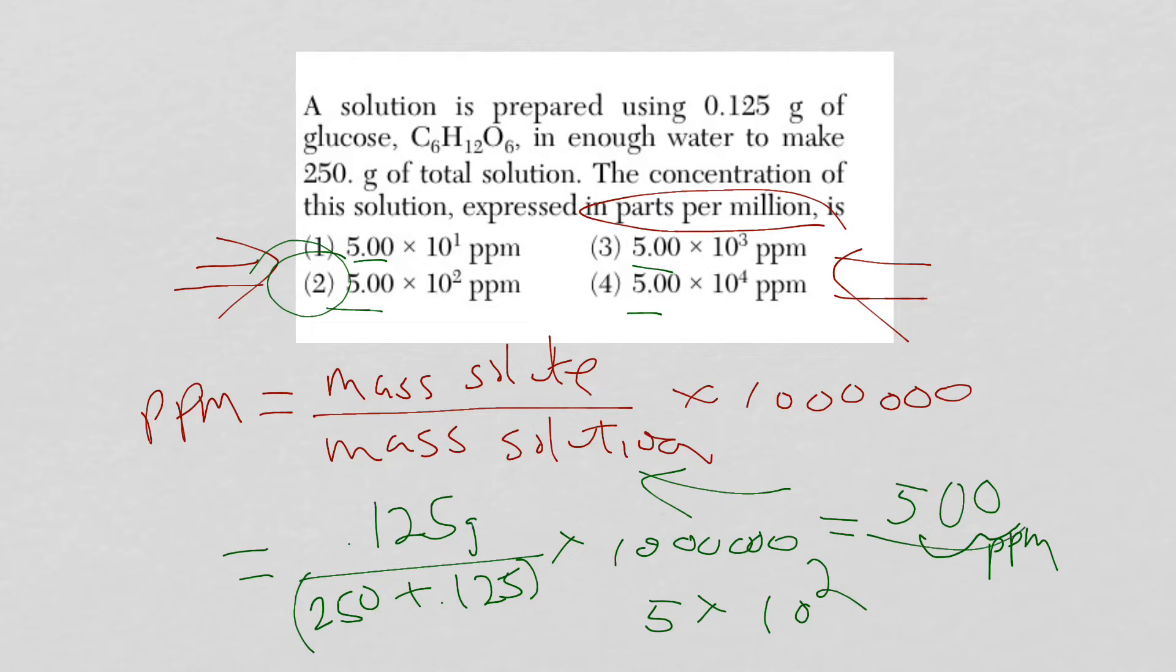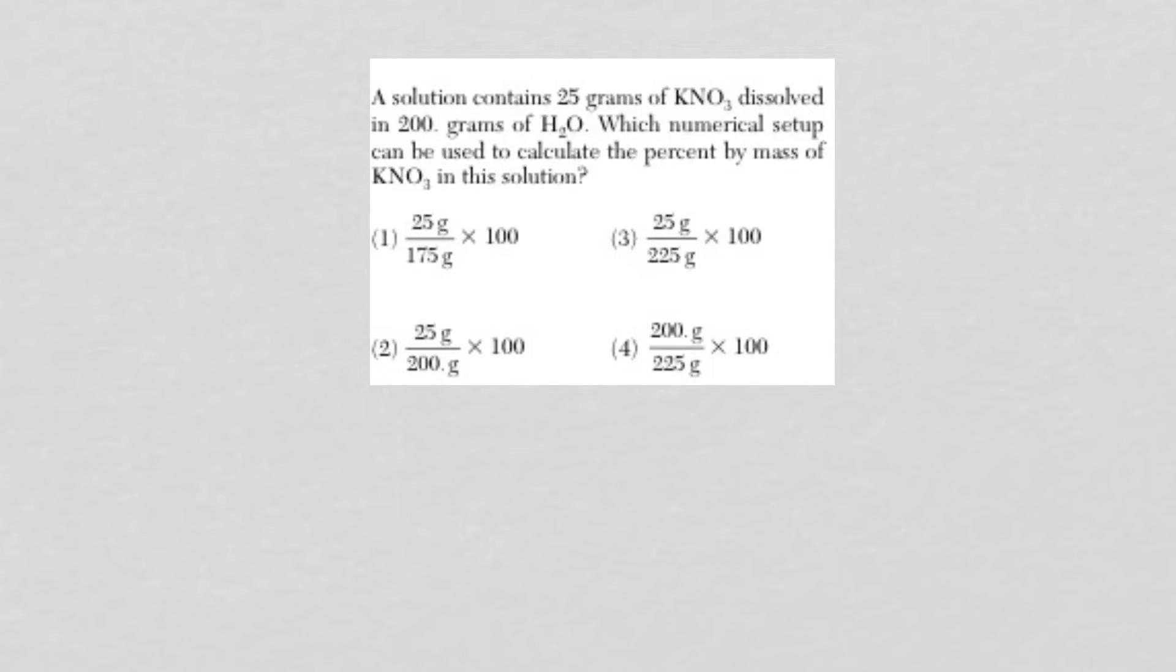Now, remember, you have a number of 500 and you're going to reduce that to five. That means you have a positive exponent for scientific notation. All right. Let's go to the second most asked question when it comes to solution concentration. And that is percent by mass.